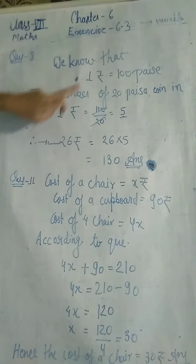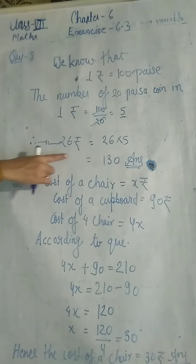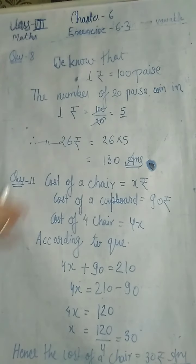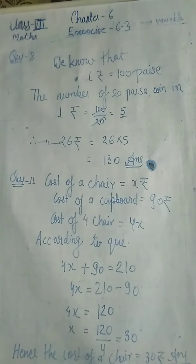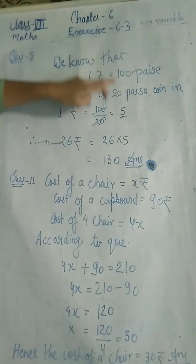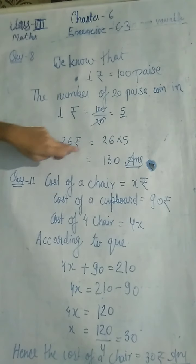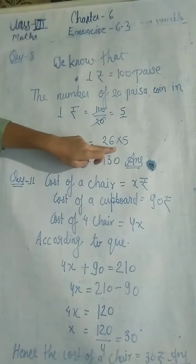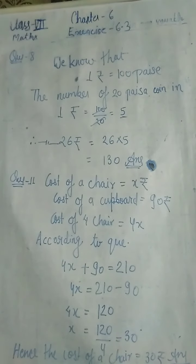The number of 20 paise coins in 26 rupees — yahi question hai aapka. 26 rupees mein 20 paise ke kitne coins honge? Number of coins nikalne ke liye — 1 rupee mein 5 coins hain 20 paise ke. Toh 26 rupees mein kitne honge? Multiply kar denge 26 mein 5 ka. Answer kitna aa gaya? 130.